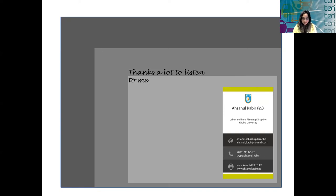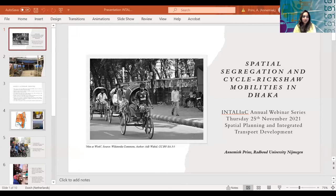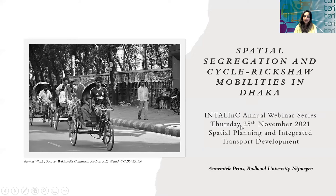I'll now invite Dr. Annemiek Prince from Radboud University of Nijmegen. Dr. Prince is a postdoc in Cultural Anthropology and Development Studies. She'll be talking about cycle rickshaws and mobility in Dhaka. For many of us who grew up in Asia, cycle rickshaws are very close to our hearts — this was the only mode of transport available to us as children. As a transport planner, it really hurts to see that their contribution is not acknowledged in any sort of planning, either at local or national level.